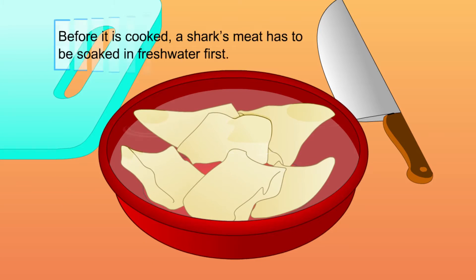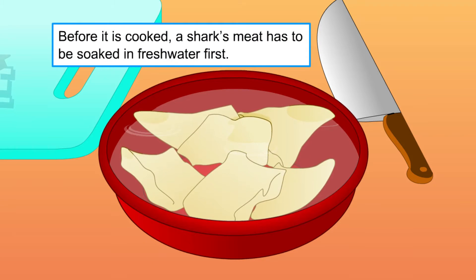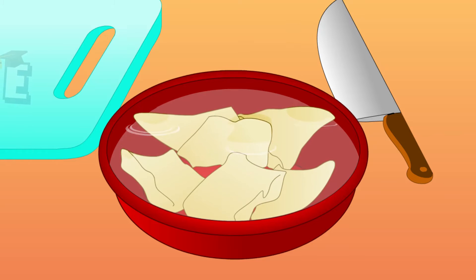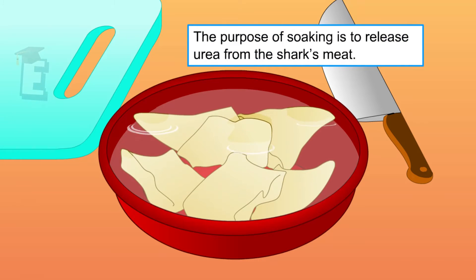If you ever ate shark meat, you will notice that the meat has to be soaked first before cooking and eating. The soaking releases urea from the shark's meat.